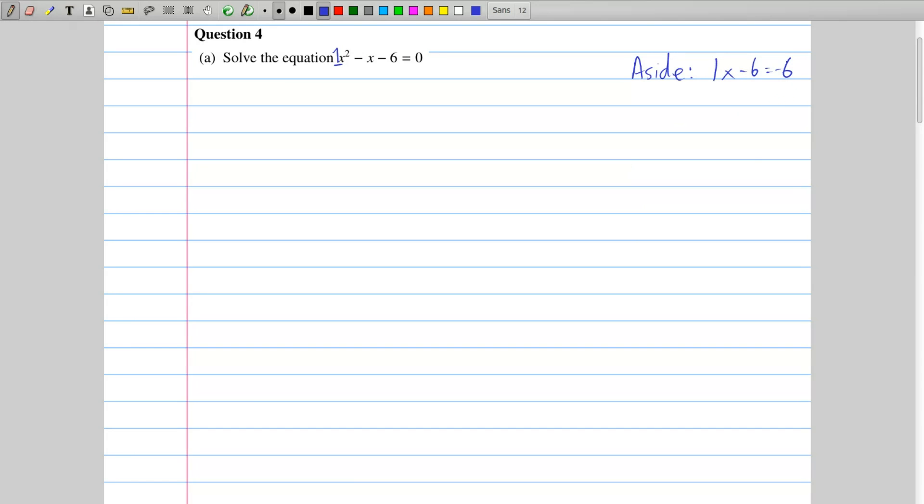And then I look for factor pairs of this minus 6. So let's say I've got a 1 and a minus 6. I've got a 2 and a minus 3. There's a 3 and a minus 2. And there's a 6 and a minus 1. Those are all the factor pairs of minus 6.